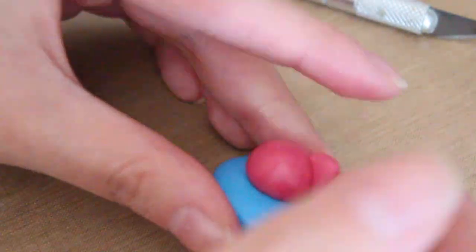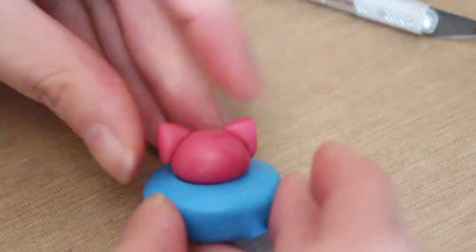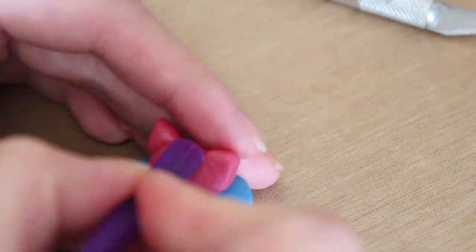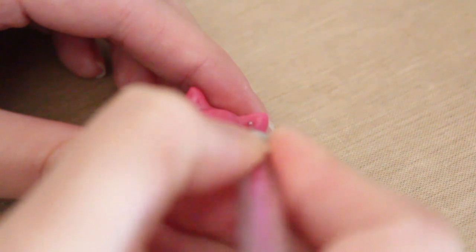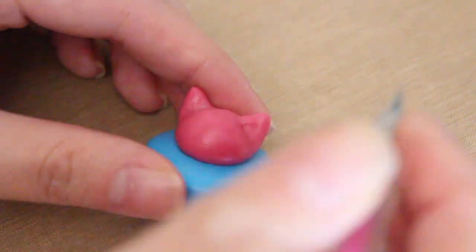Once you have the cupcake shaped the way you like it, I am adding some ears onto my watermelon and I'm blending it in with my Sculpey tool. These are just two little triangles that I put on top. And then I'm using my smaller dotting tool to just indent the ears.